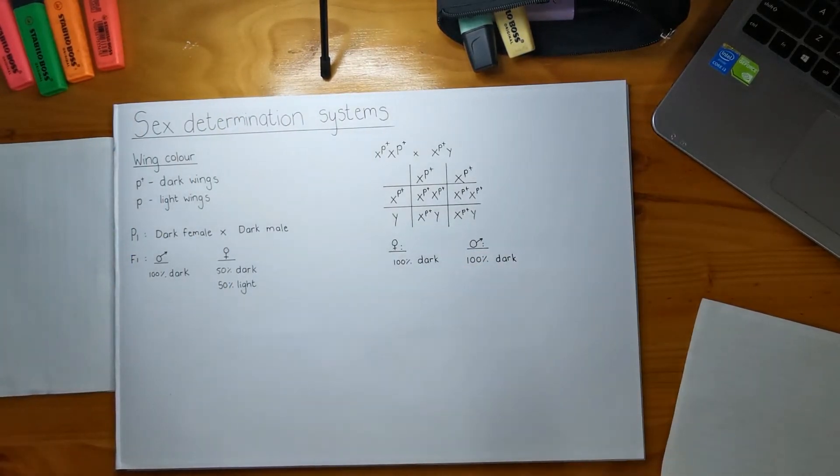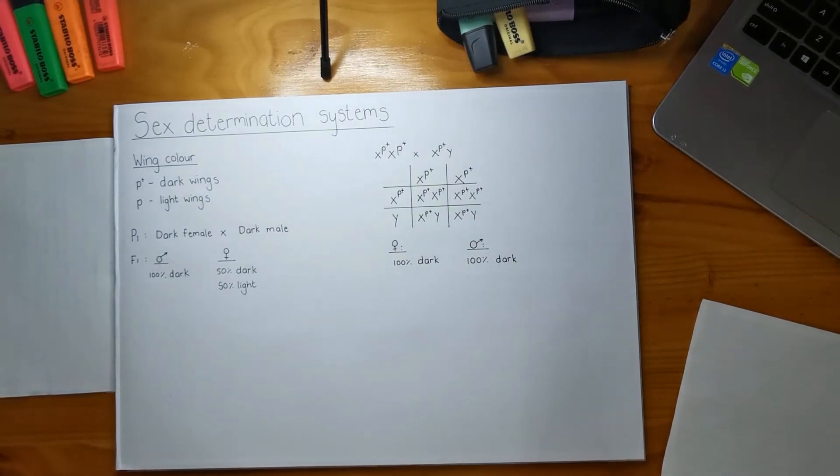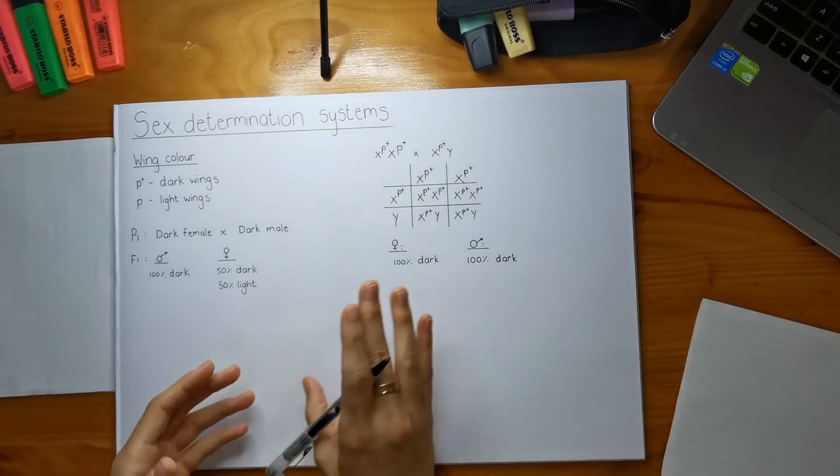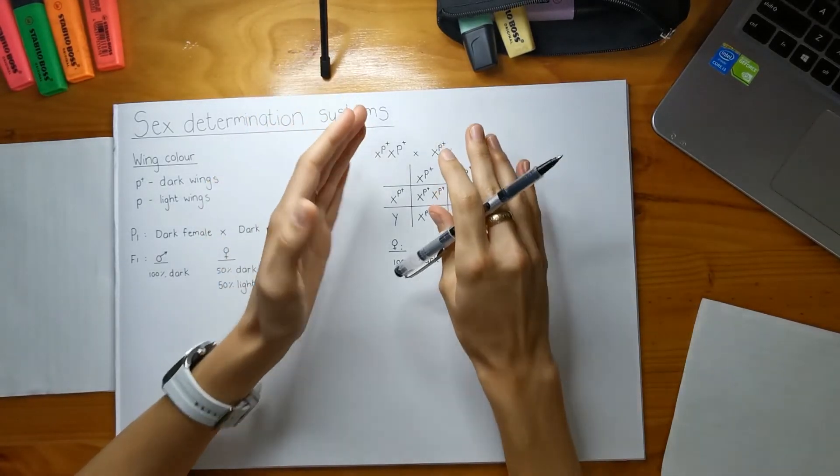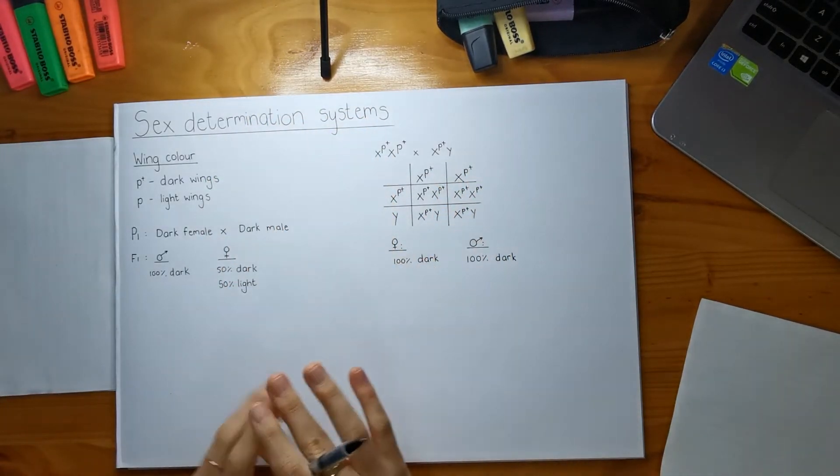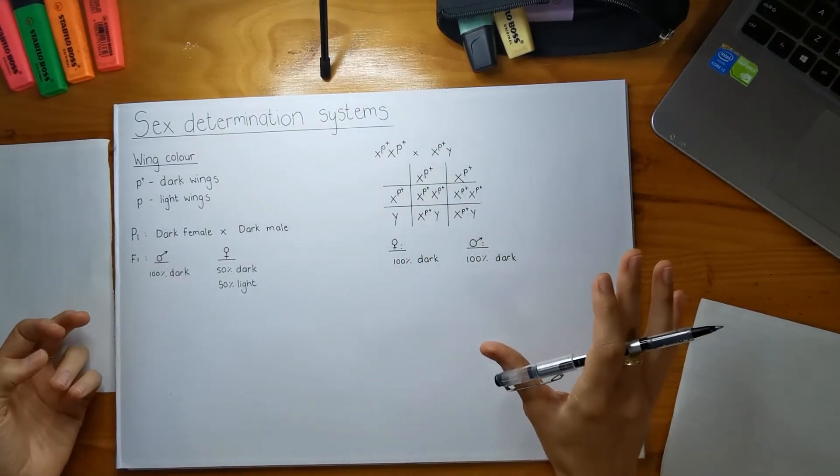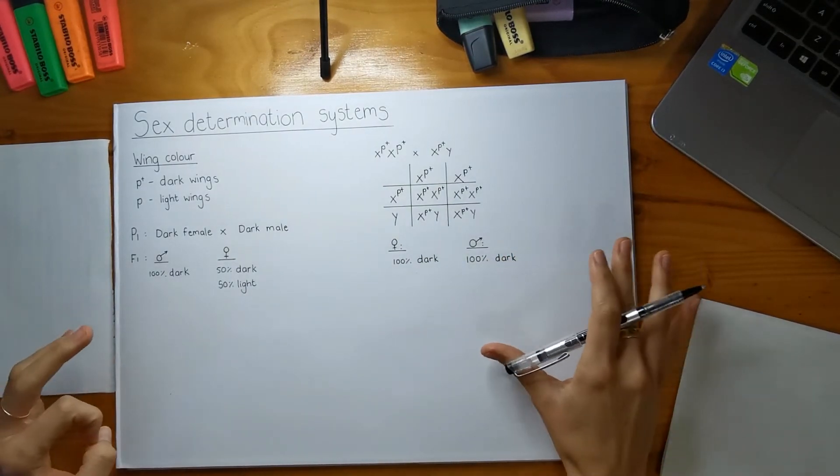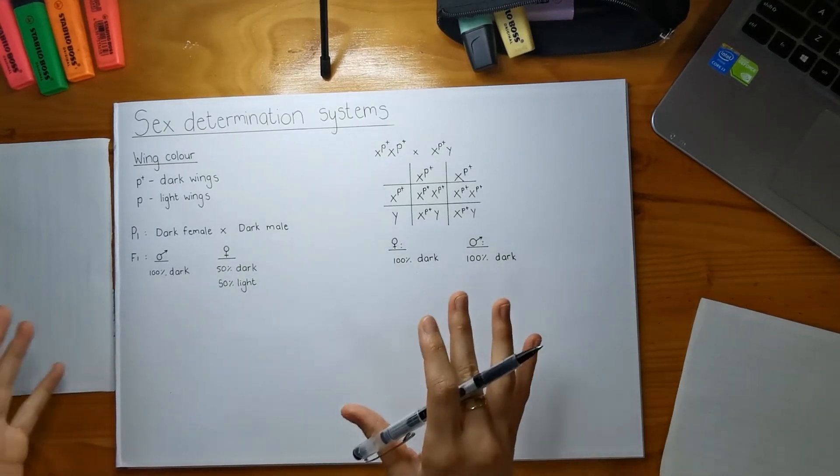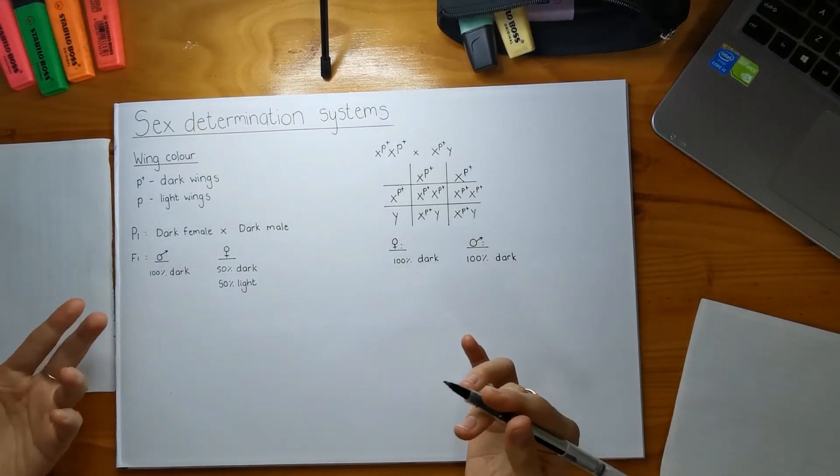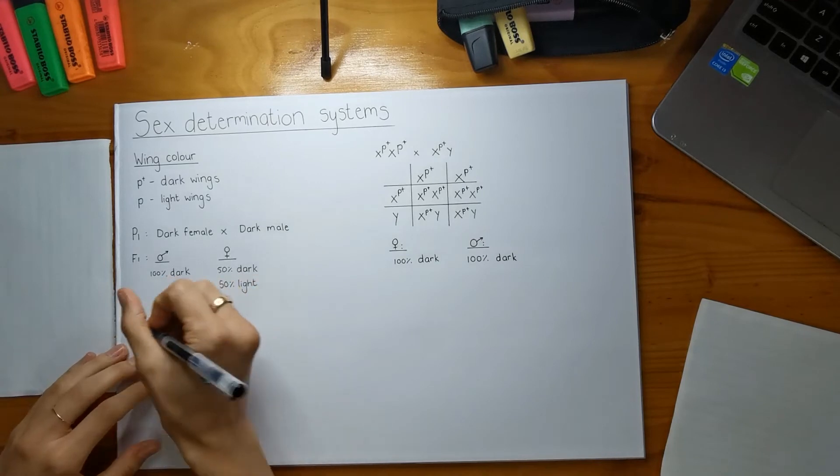You end up not getting the progeny that they tell you in the question. So now you might stop and think okay this is not right. Why am I getting this wrong? I'm using the X and XY chromosomes and the reason is because moths do not follow this particular pattern. They follow the ZZ/ZW pattern and you had to pick up early on in the test question that moths follow that system. So now let's try it with the ZZ/ZW system.